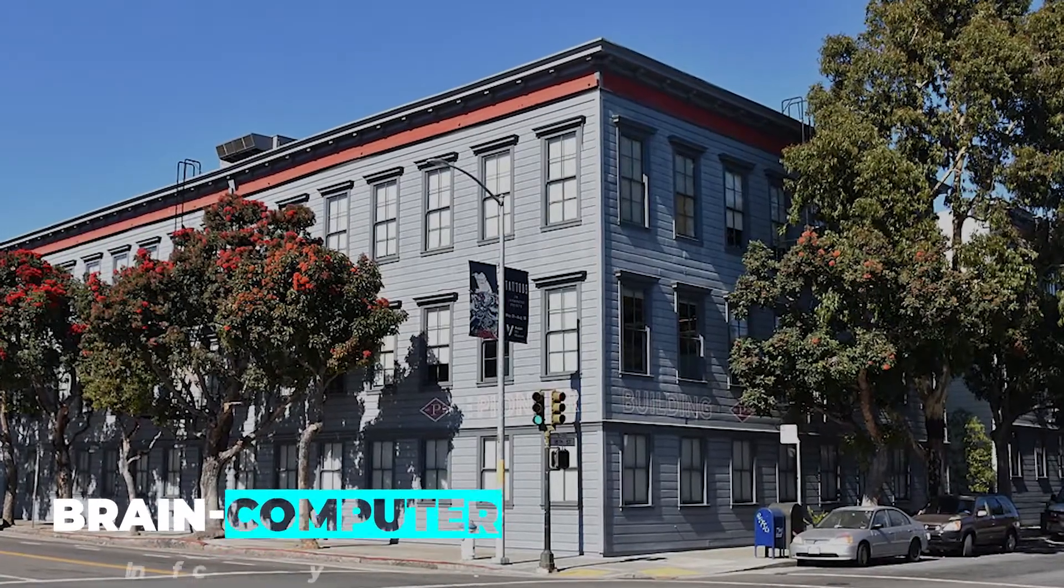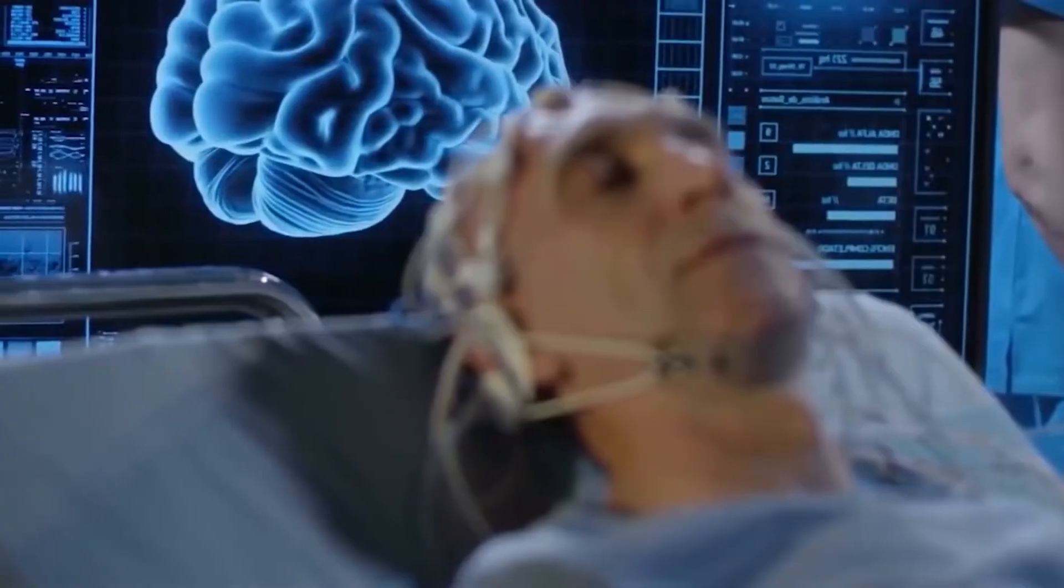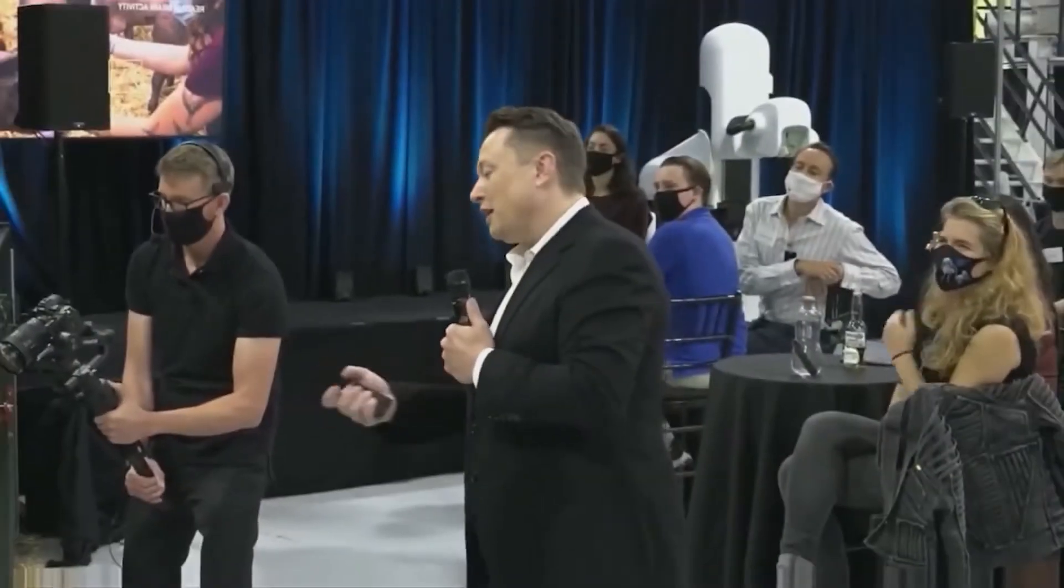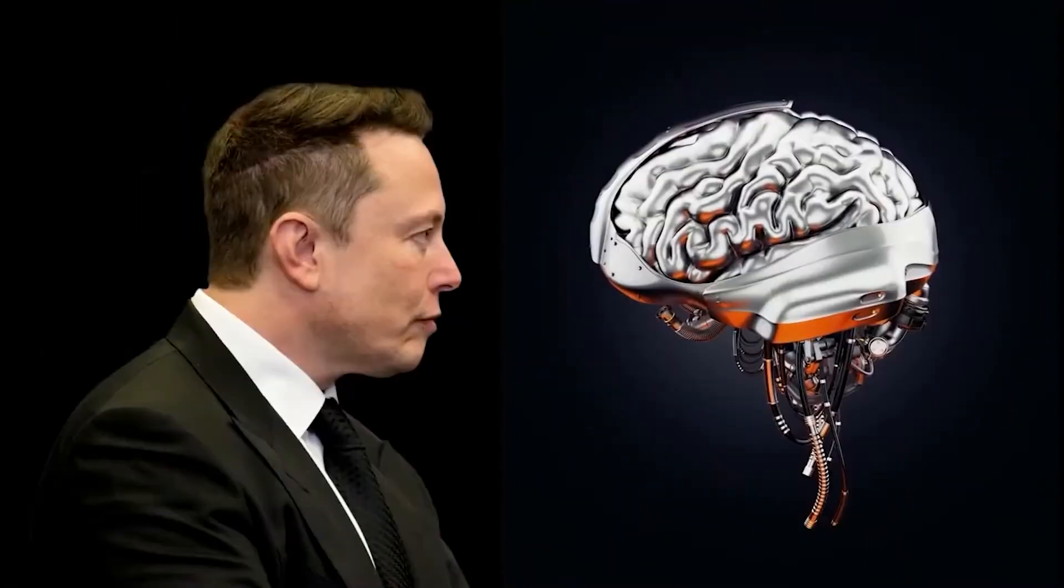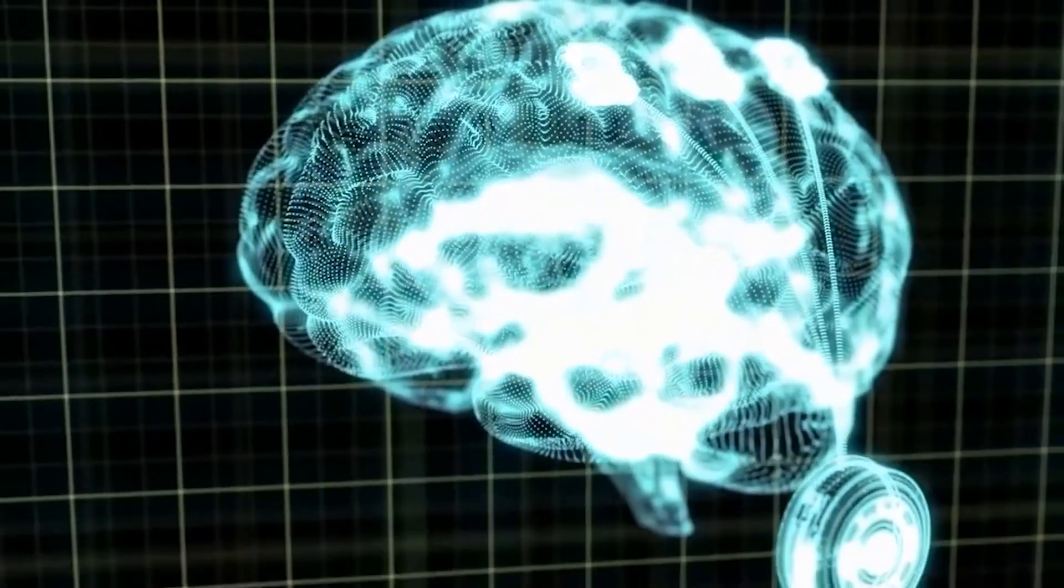Neuralink is a brain-computer interface company that aims to link computer and brain that will assist in solving a number of problems in the future. It was founded in 2016 by Elon Musk and other partners. Elon Musk has revealed his plans to merge man and machine.